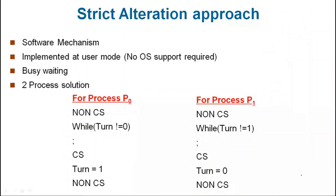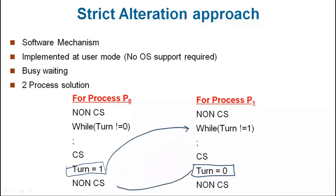So the P0 process is created when turn equals 0, and P0 executes; turn value 0 goes to P0 process, turn value 1 goes to P1 process. This is a way to guarantee mutual exclusion. Mutual exclusion is guaranteed.